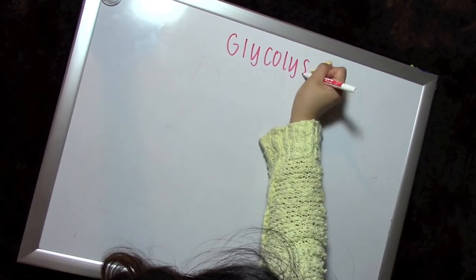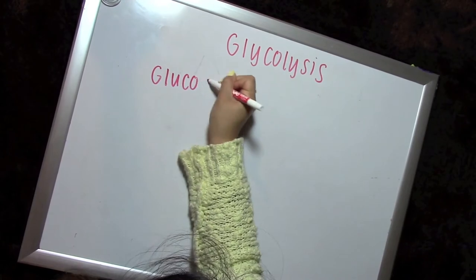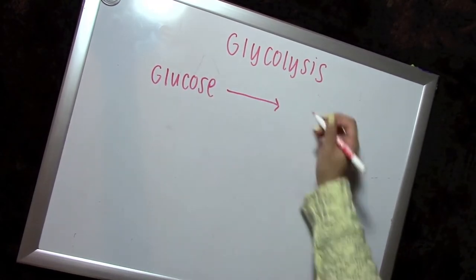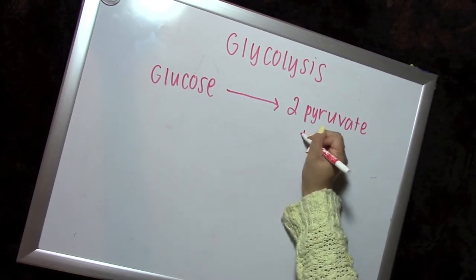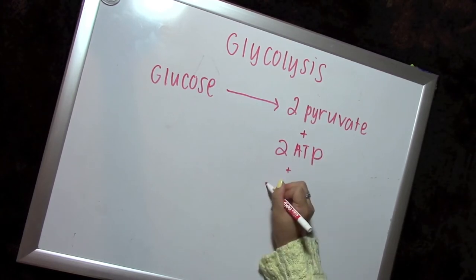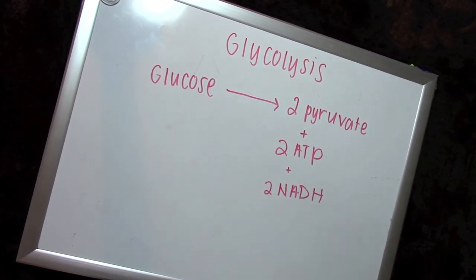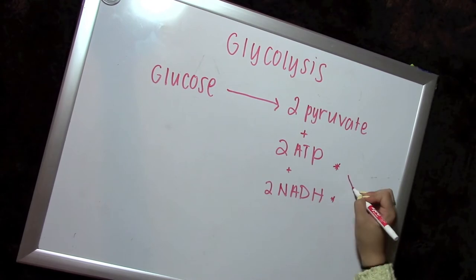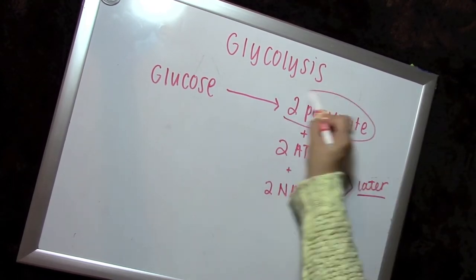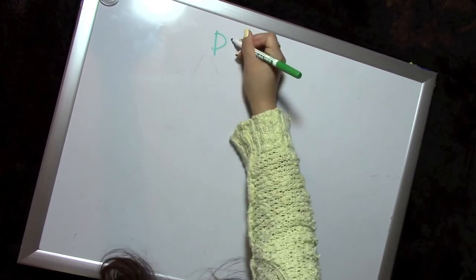So the first process I want to talk about is glycolysis. Glycolysis takes the glucose that we eat from our breads and our carbs and everything, and it converts it into two pyruvates, two ATPs, and two NADHs. We will be using and talking about the two pyruvates in the next step, but for now the two ATPs and two NADHs will be saving for later.